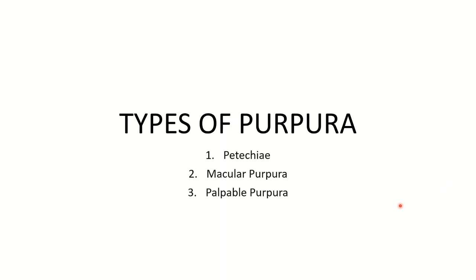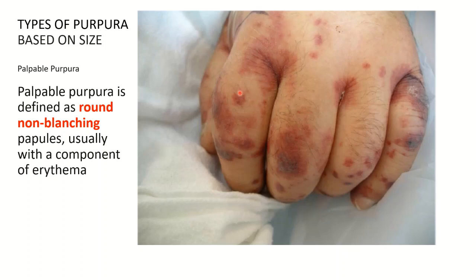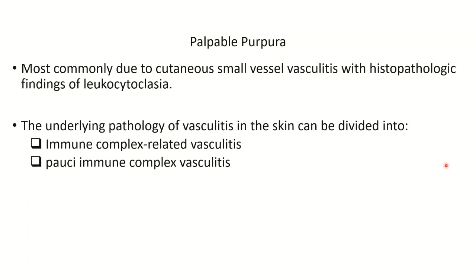The third type of purpura is palpable purpura. These are defined as round, non-blanching papules, usually with a component of erythema. When palpable purpura is seen, the underlying pathology is mostly cutaneous small vessel vasculitis or some other vasculitis. The vasculitis in palpable purpura can be divided into two causes: immune complex-related vasculitis and pauci-immune complex vasculitis. Vasculitis is in itself a huge topic, and here we will only broadly see how vasculitis results in purpura.